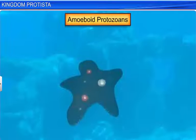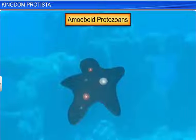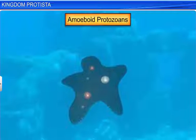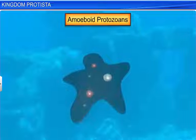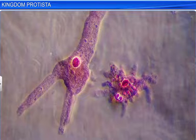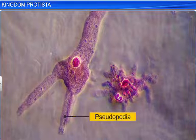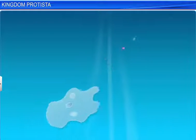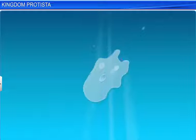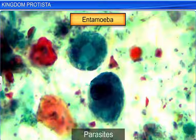Out of these, amoeboid protozoans are found in fresh water, marine water, as well as moist soils. They use false feet, called pseudopodia, to move and capture their prey. Some amoeboids, like Entamoeba, are parasites.